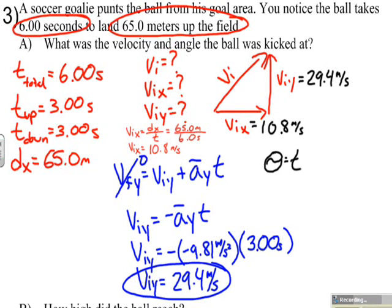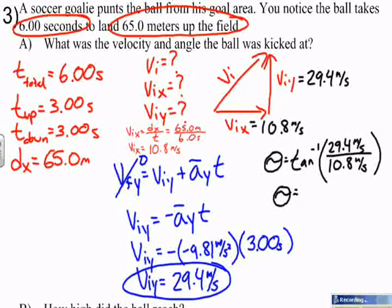We're asked again what the angle is. So, I'm going to use the inverse tangent function, and do the inverse tangent of my opposite, which is my viy of 29.4, and divide it by the adjacent, which was 10.8 meters per second.